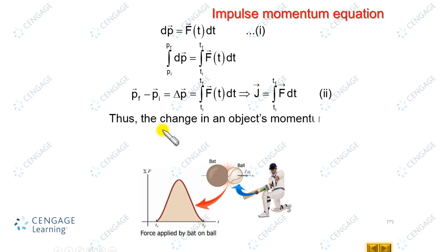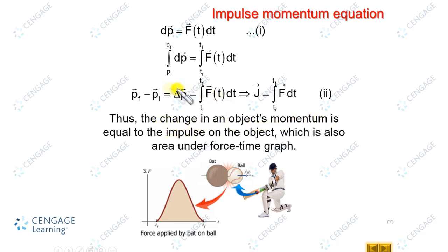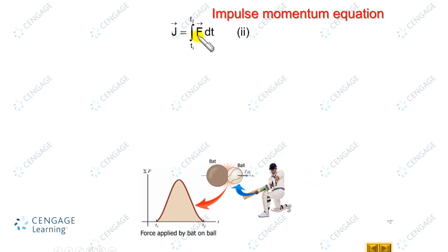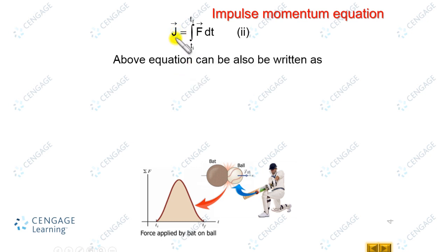The change in linear momentum of the ball, delta-p, equals J — meaning the change in linear momentum of the object is equal to the impulse on the object. This is also equal to the area under the force-time diagram, since the geometrical meaning of the integral means that if we draw a graph between force and time, this area represents the impulse. So we write J-vector equal to the integral from t-initial to t-final of F-vector dt. We can rearrange: impulse equals change in linear momentum, that is m·v-final minus m·v-initial, equal to the integral from t-initial to t-final of F dt.